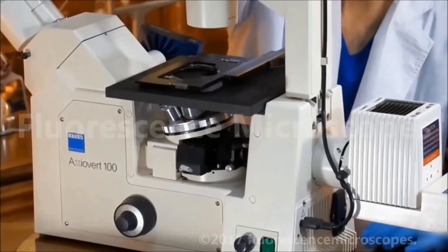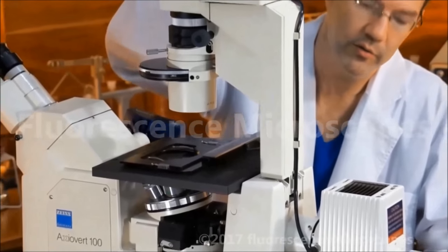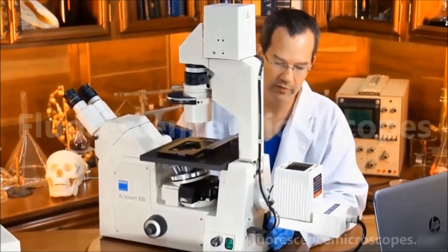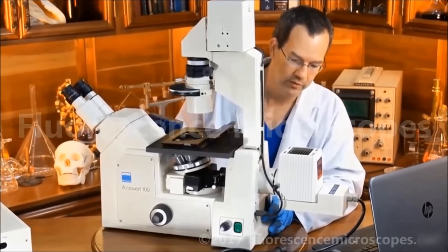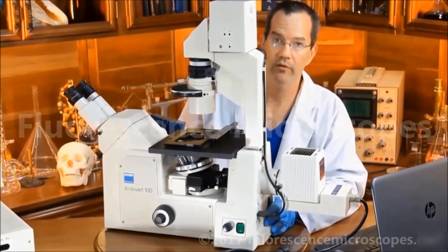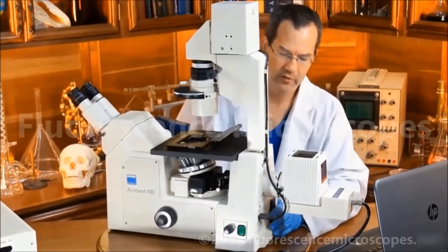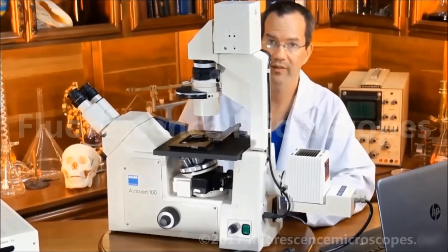The power supply for the 100-watt halogen is located internal to the frame. You can compare that to the Axiovert 35 model, which is a little older model, and it had an external power supply, which was a little cumbersome. You had to make a space for it on the table. This is a much better design.